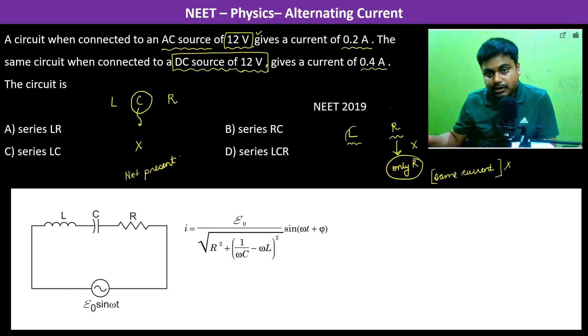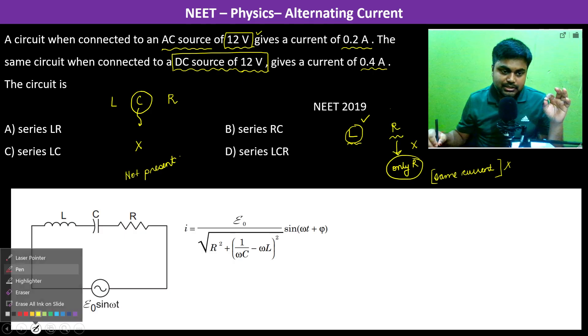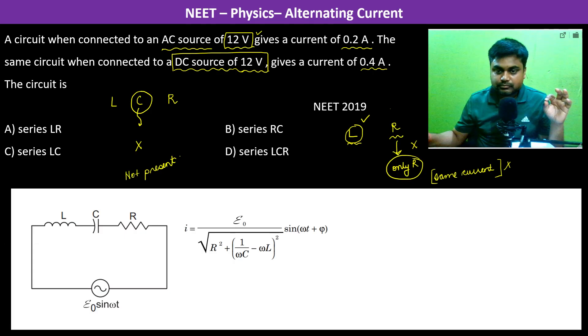There has to be inductor also. Now, if there was only inductor, then what happens? You see, XL is equal to omega L and since it is DC, omega is 0.